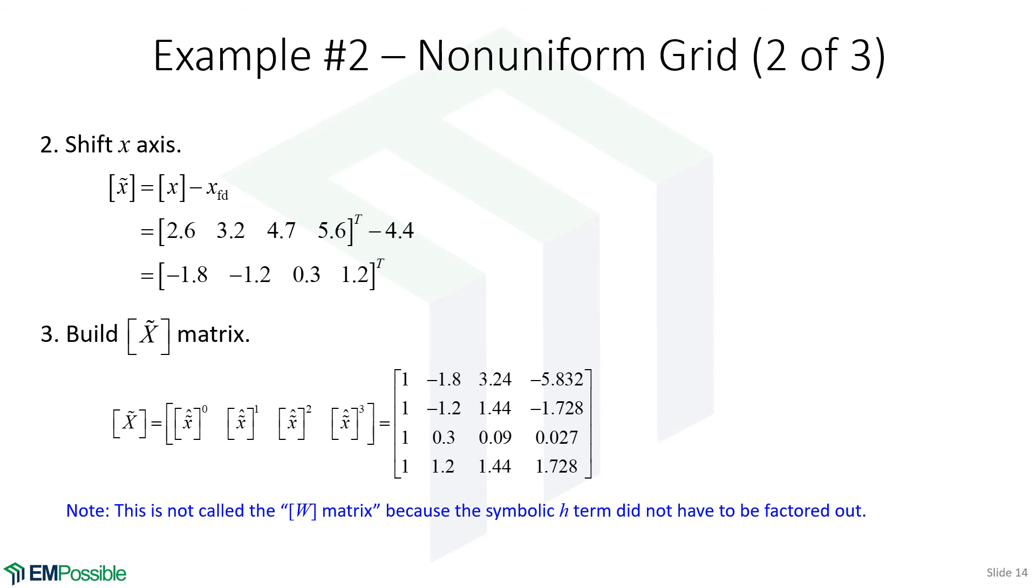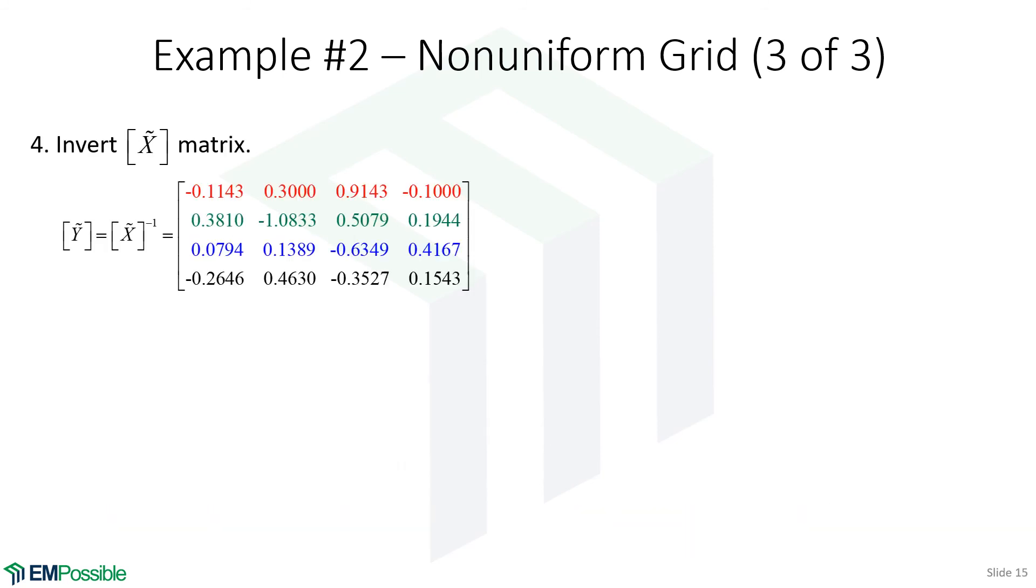Now we'll build the X matrix. Our first column is all ones. We have our offset coordinates, offset coordinates squared, offset coordinates cubed.